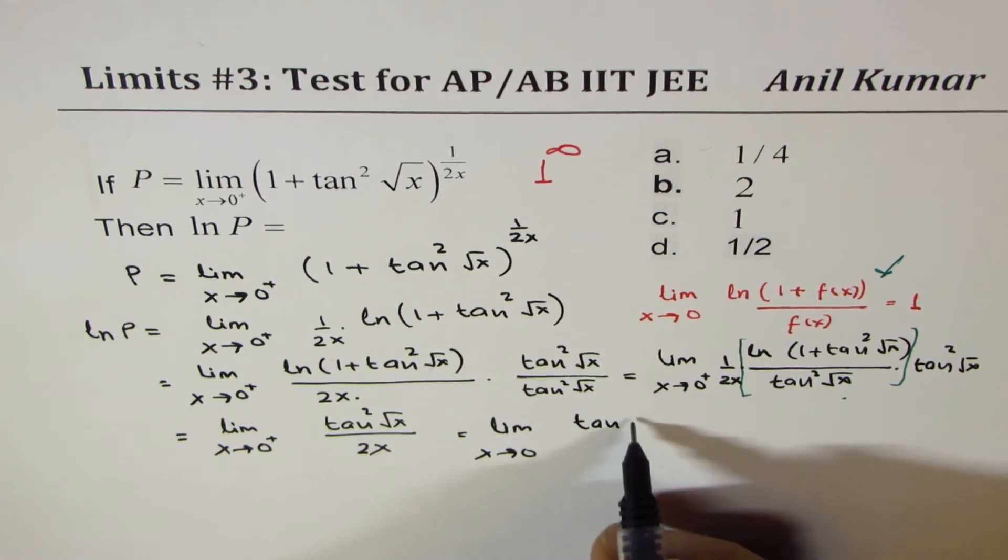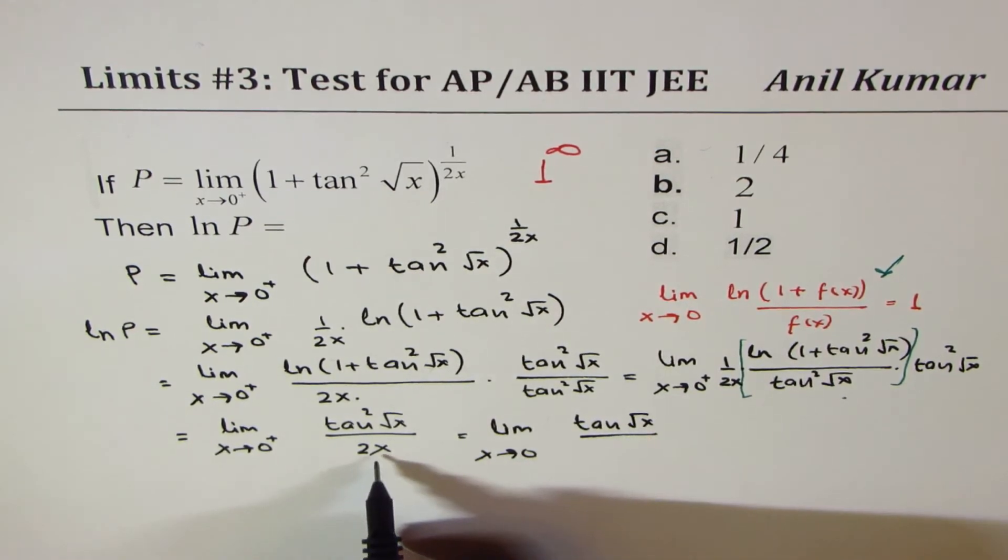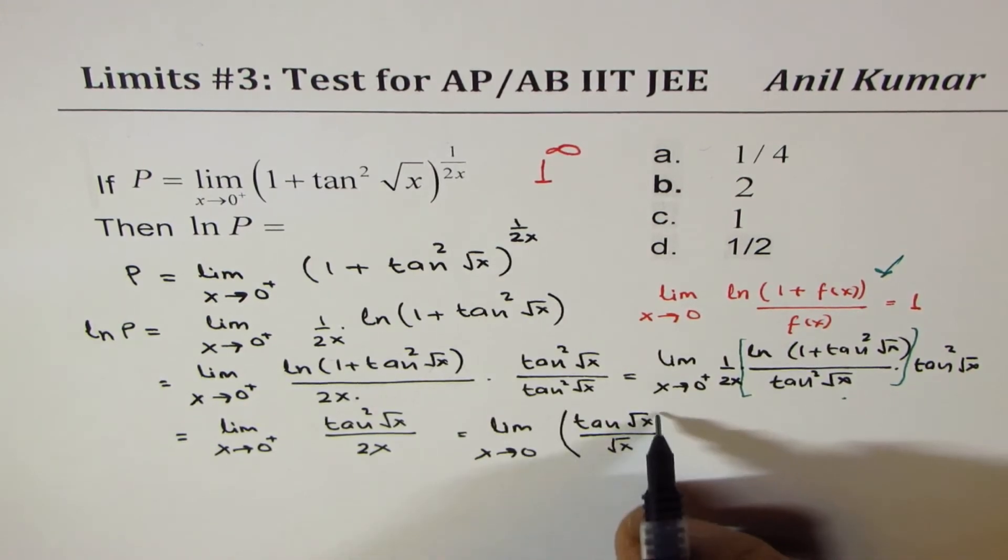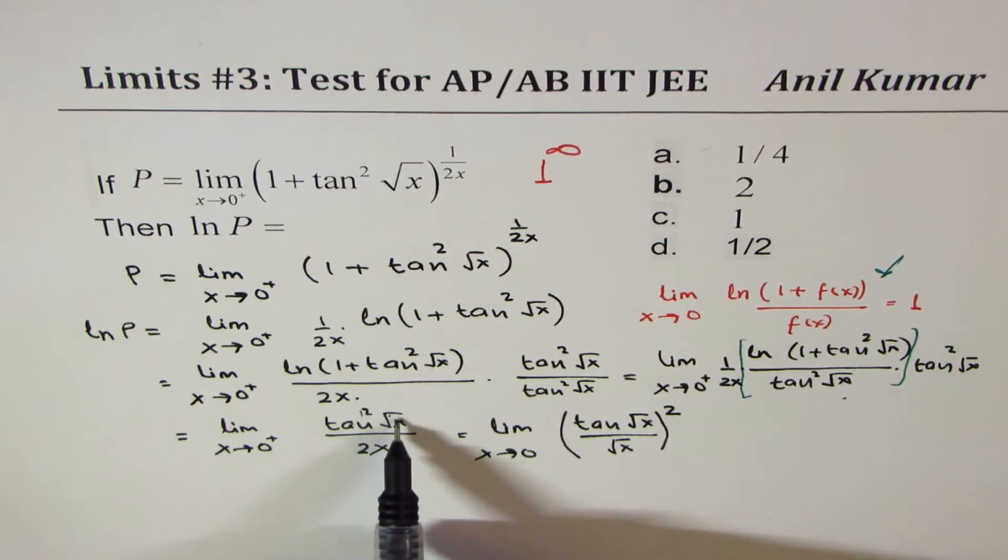This is square term, let me write tan√x and the denominator, x I could write like (√x)², do you see that? So we get tan√x divided by √x.